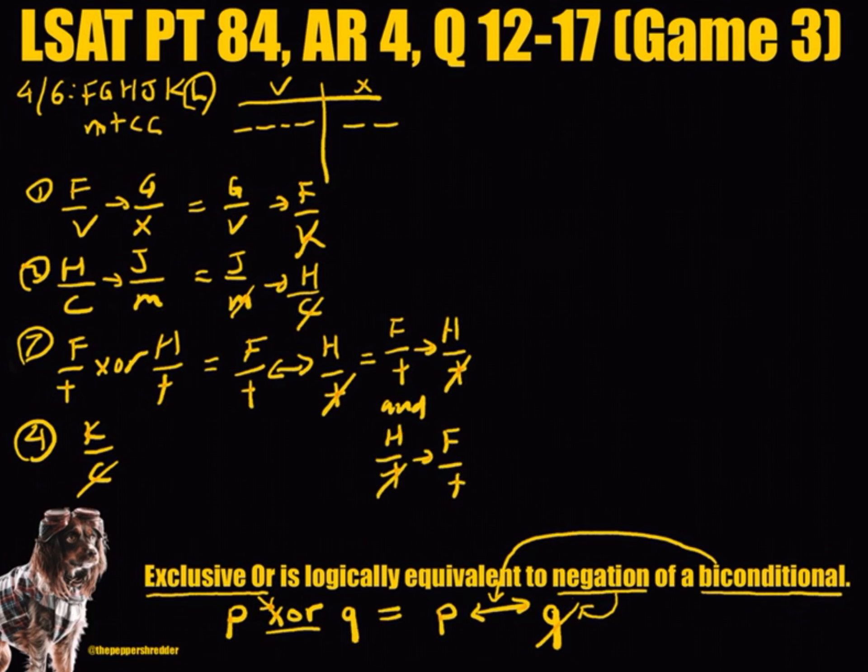We can take the contrapositive of these two conditionals. The contrapositive of the first statement is if H is grouped with T, then F must not be grouped with T. The contrapositive of the second conditional statement is if F is not grouped with T, then H must be grouped with T.